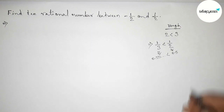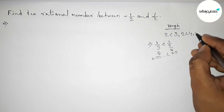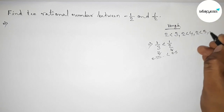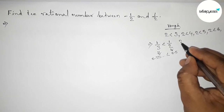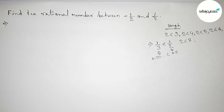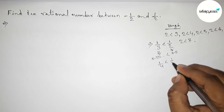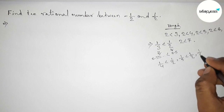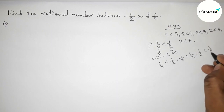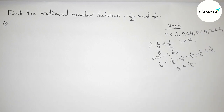Now taking other numbers: 2 less than 4, 2 less than 5, 2 less than 6, and 2 less than 7. For all these cases we can similarly write: 1 by 4 less than 1 by 2, then 1 by 5 less than 1 by 2, then 1 by 6 less than 1 by 2, then 1 by 7 less than 1 by 2.